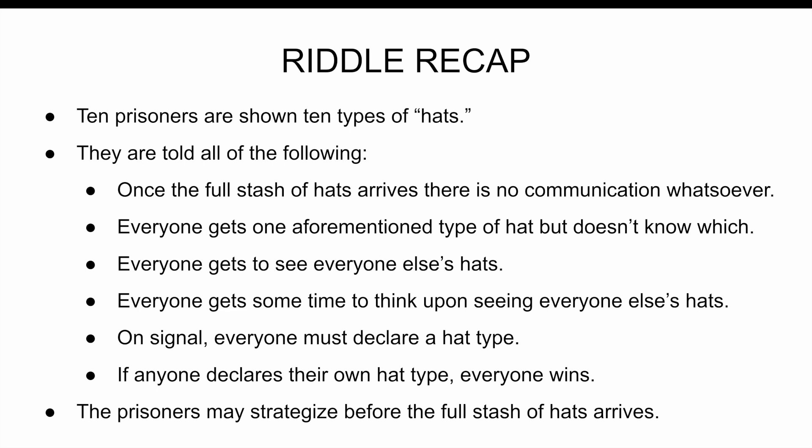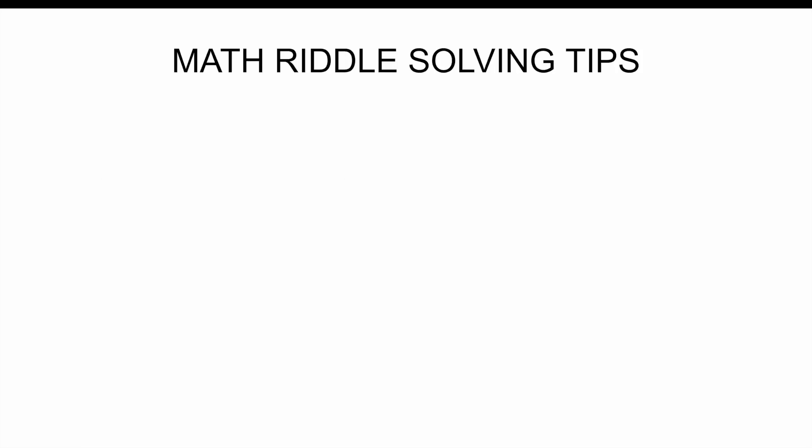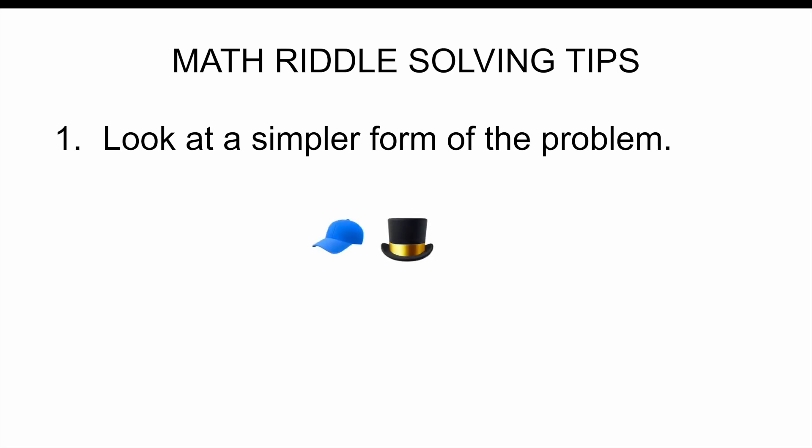But maybe you're stuck. In fact, I often hear, I don't get how this puzzle is possible. No matter what strategy you use, each prisoner has exactly a 10% chance of being right. Well let me help you move forward just a little with math riddle solving tip number one. Look at a simpler form of the problem. What if it was just two prisoners and two types of hats? Let's say a cap and a top hat. How would those two prisoners strategize? If you give yourself a chance, I'm convinced you can figure this one out. It's much easier than the general problem. This is even a fun riddle for kids that they can legitimately solve but may have to think for a bit before they see the solution.